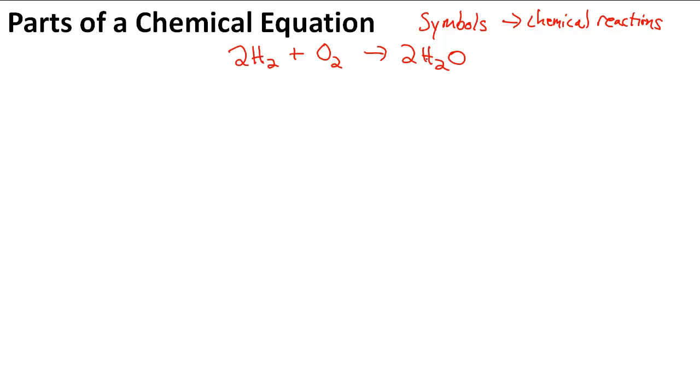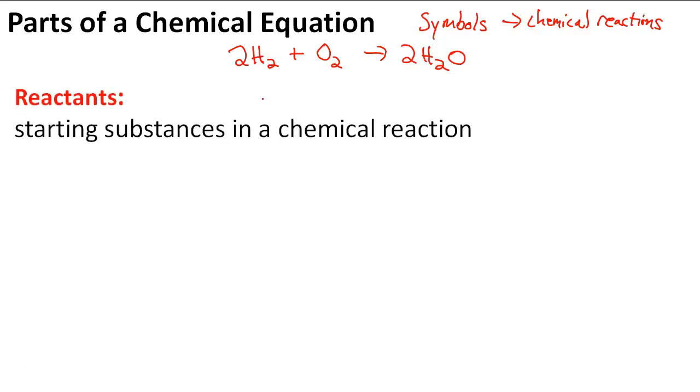Now there are different parts of the chemical reaction. First is the reactants. The reactants are the starting substances in a chemical reaction. So here, for this chemical equation, these are the reactants.